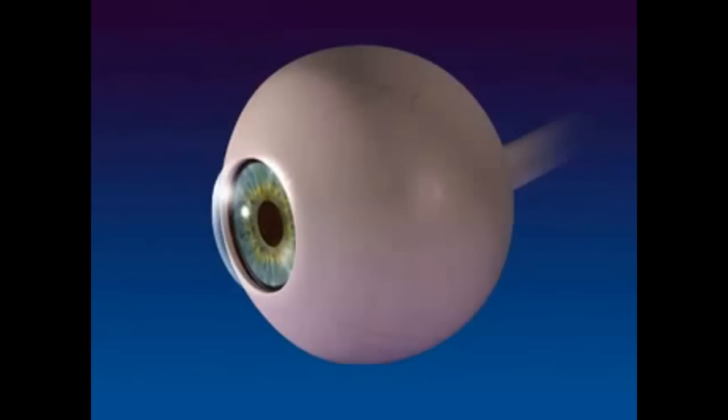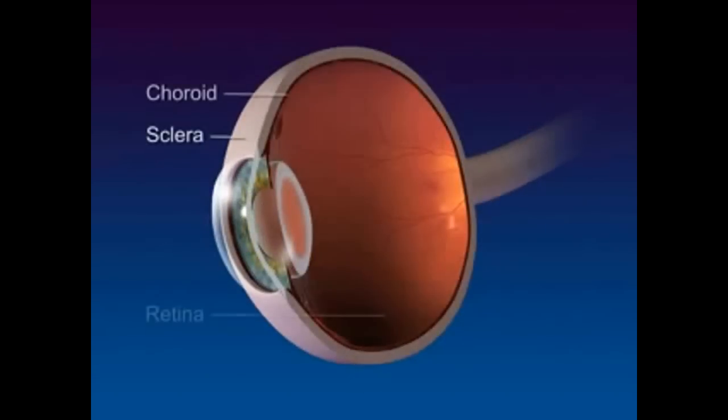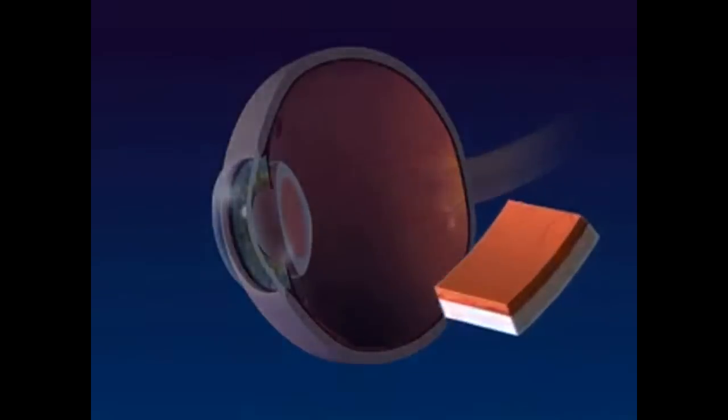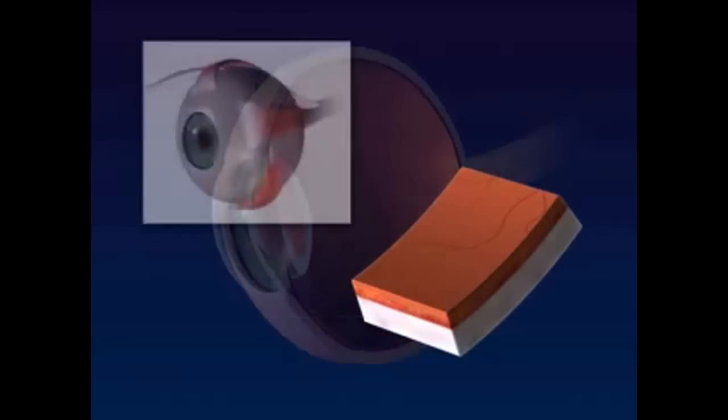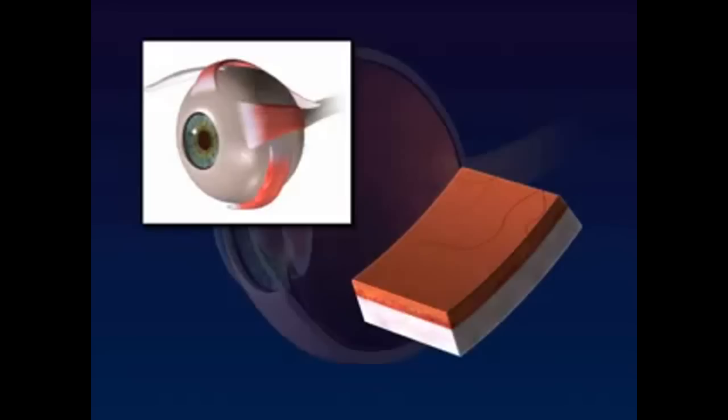The eye has three layers: the sclera, choroid, and retina. The sclera is the outer white layer that maintains the shape of the eye. Muscles attached to the sclera control eye movements.